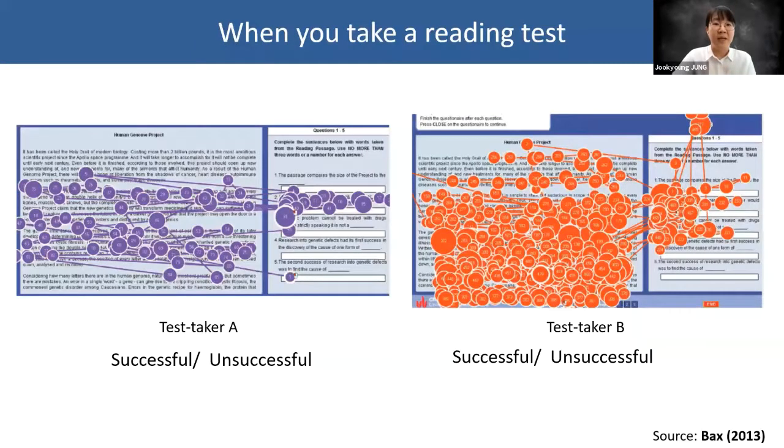Let me show you how two different test takers behaved differently when completing this item. Let me share this eye movement data, which was reported in Bax's 2013 study. Here we see Test Taker A and Test Taker B. Which test taker do you think shows eye movements of a successful test taker? Again, please share your thoughts in the chatting room. A or B?